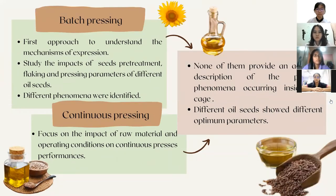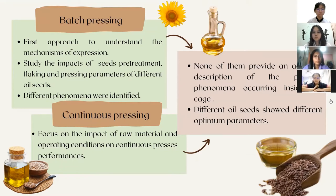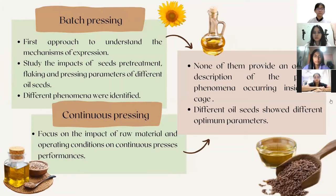Batch pressing is the first approach to understand the expression mechanism. The impacts of seed procurement such as moisture conditioning, dehulling and flaking, and the pressing parameters — pressure, temperature, and time — for different oil seeds have been studied. The results identified different phenomena such as air expulsion and primary and secondary consolidation. Continuous pressing of oil seeds has also been studied, particularly focused on the impact of raw materials such as species and seed pre-treatments, as well as operating conditions on continuous press performance.